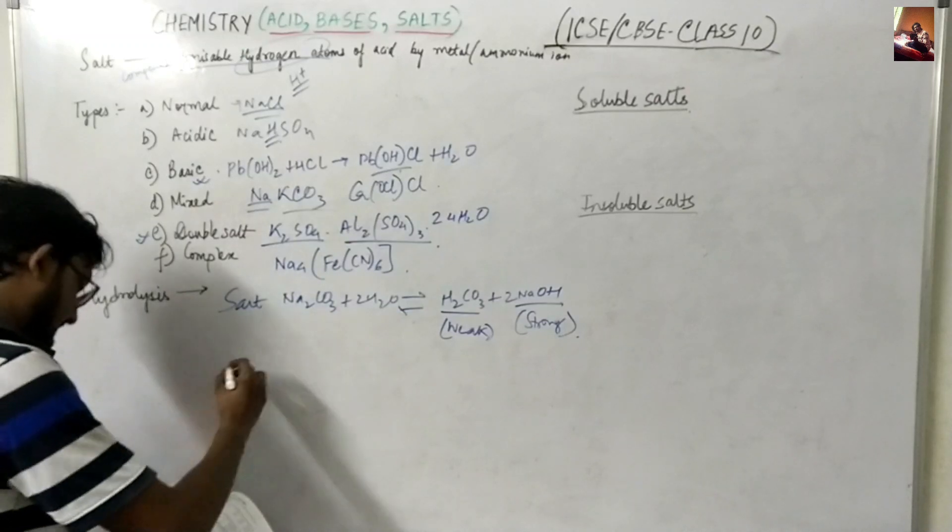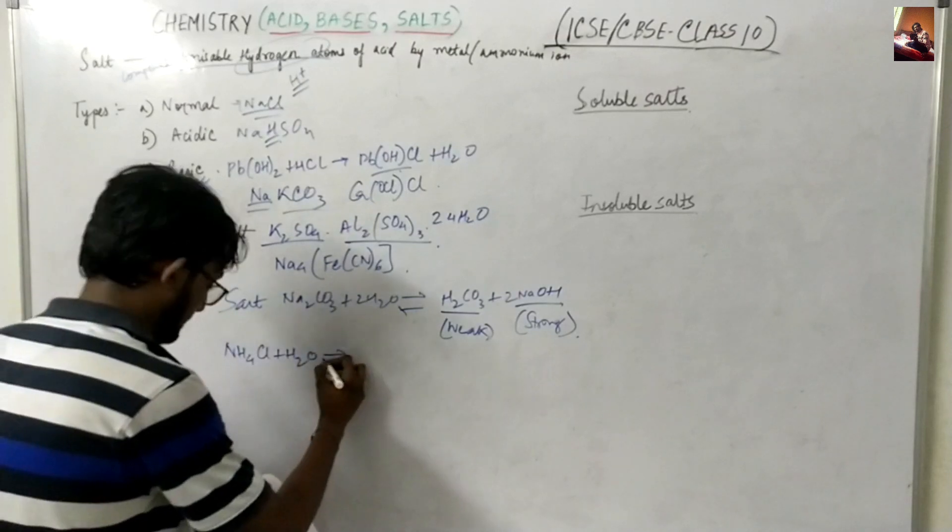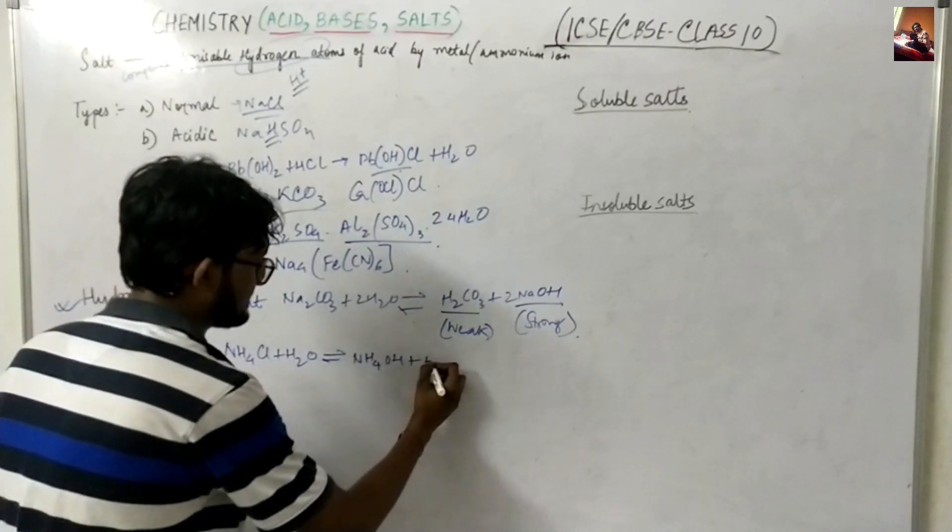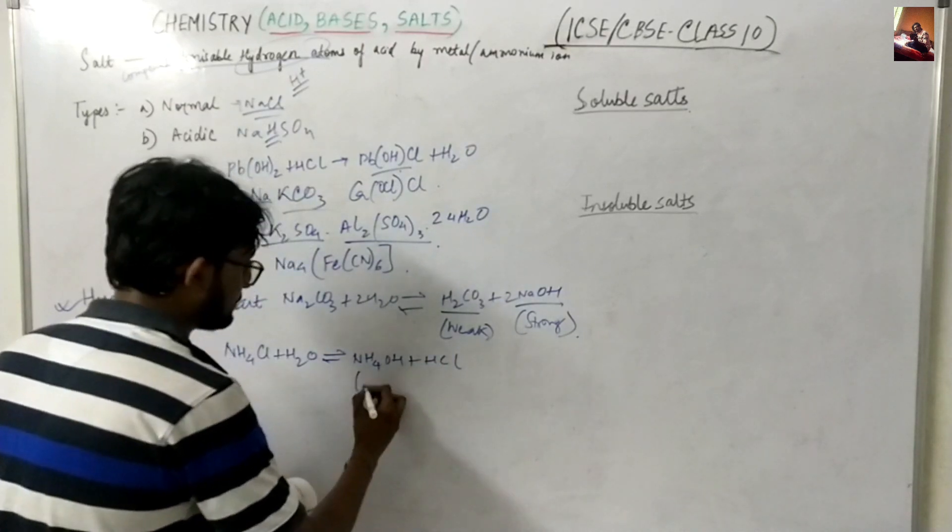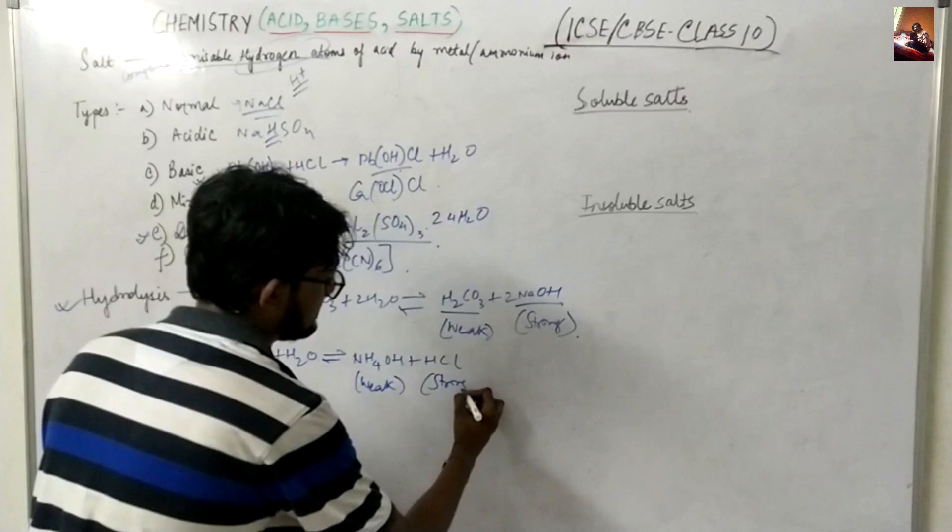In case of like, I will give you another example. NH4Cl plus H2O will give you NH4OH plus HCl. So in this case, this is weak base and strong acid. Just the reverse one.